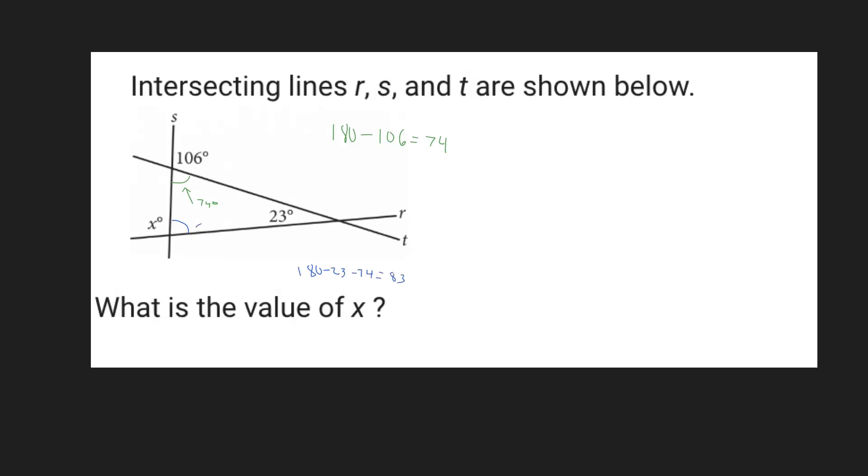So because this angle is 83 degrees, that means we can also use supplementary angles again to find the value of X. Now why? Because we have two angles lying on the line R, right? So any two angles on a line will be equivalent to 180 degrees. And so here we're going to do 180 minus 83, and get our value of X, which is going to be 97 degrees.